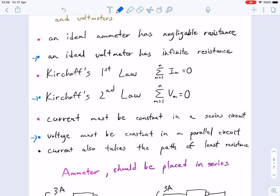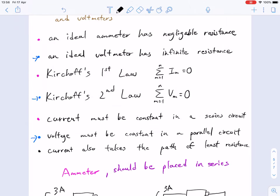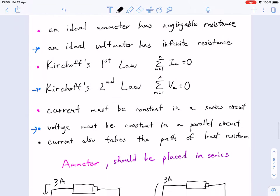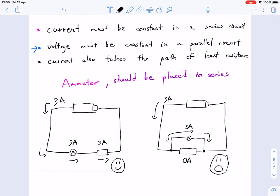Current has to be constant in a series circuit, and this comes from Kirchhoff's first law. Likewise, voltage is constant in a parallel circuit. But one of the most important things that is independent of both laws is that current likes to take the path of least resistance. So if it can help it, it's going to avoid any type of resistance. It wants the easiest path, or so do we as humans.